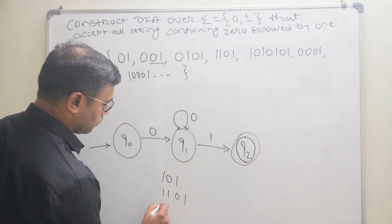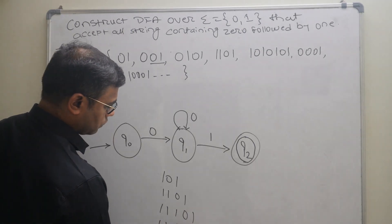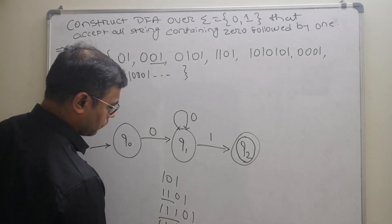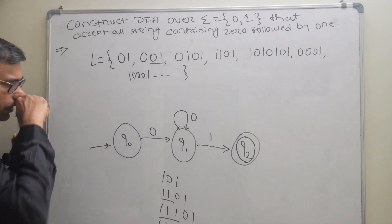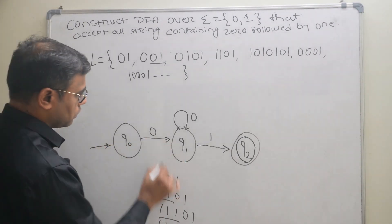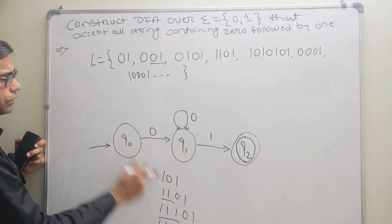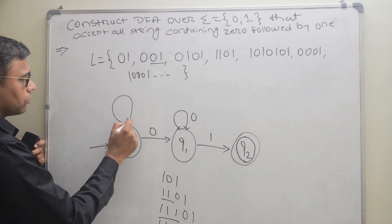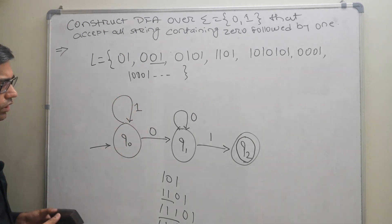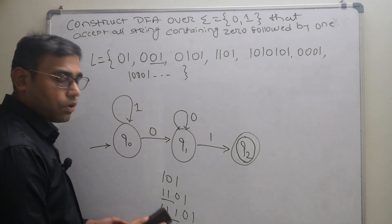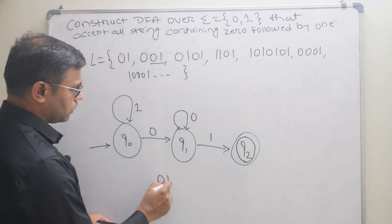Next, the string can start with ones: 101, 1101, 11101, 111101 — any number of ones. So we apply a self-loop on one at q0 as well, so it can accept any number of leading ones before encountering zero-one.